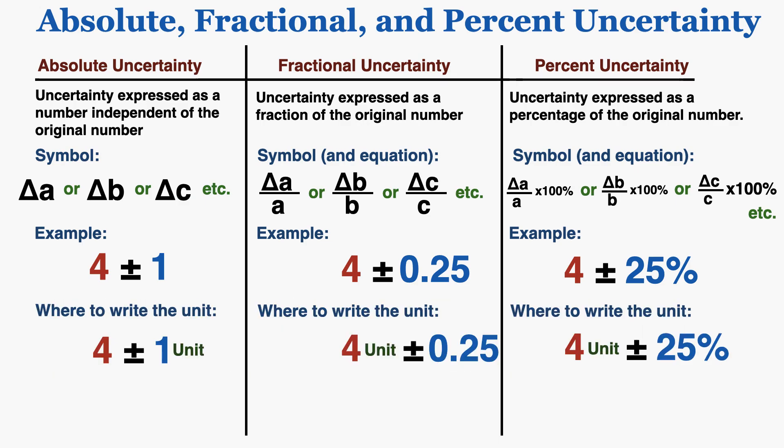The unit of measurement is written in a different place for absolute, fractional, and percent uncertainty. For absolute uncertainty, it's written to the far right of the number, because both the number and the uncertainty are measurements in that unit — they're independent and absolute. Whereas with fractional and percent uncertainty, we put the unit only next to the measurement value, not next to the uncertainty, because that uncertainty is not measured in the same units as the original number.